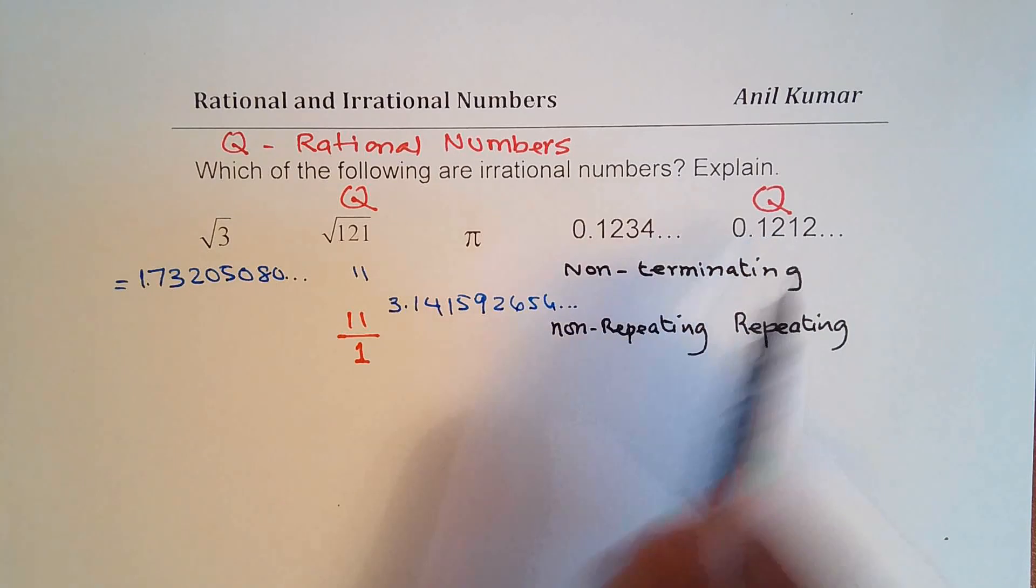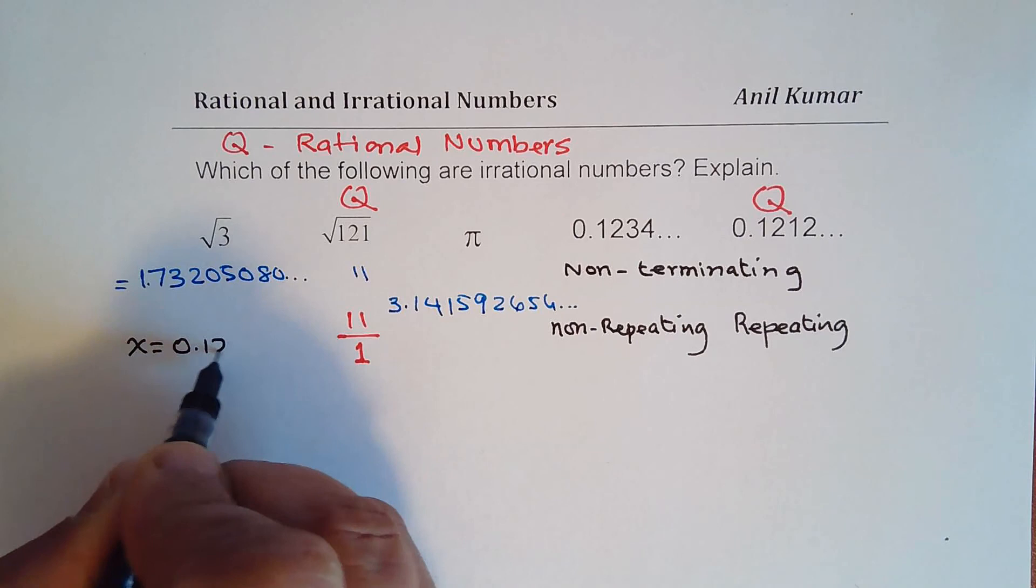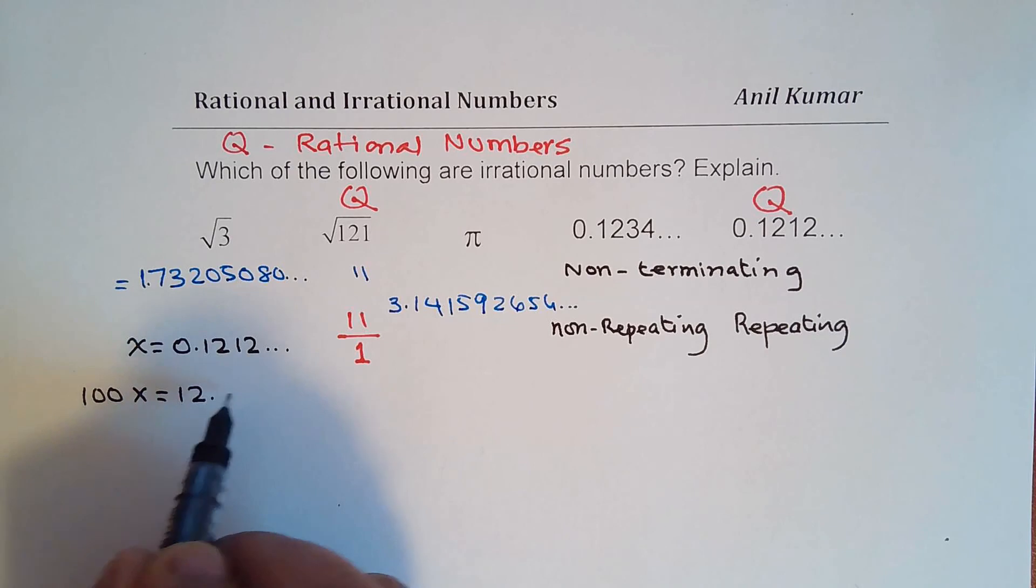So let's say the number x is equal to 0.1212 and so on. In that case, I could write 100x as 12.1212 repeating, correct?